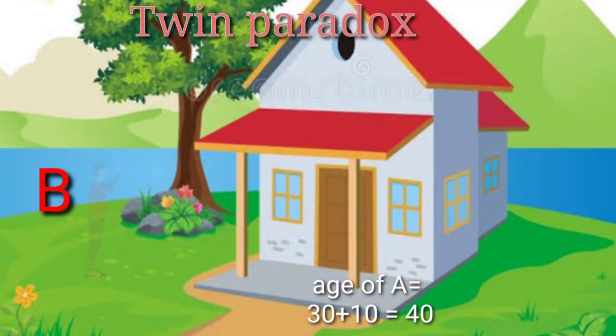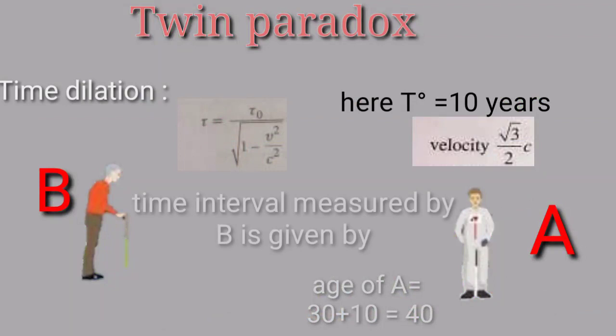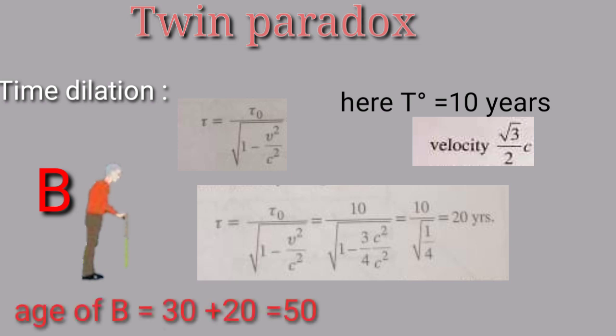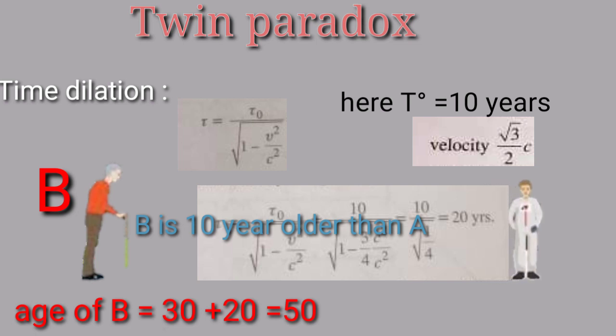But for B, if you use the time dilation formula, 20 years have passed. So the age of B is 30 plus 20, that is equal to 50 years. So B is 10 years older than A, and this is called the twin paradox.